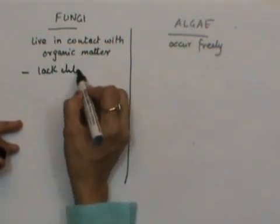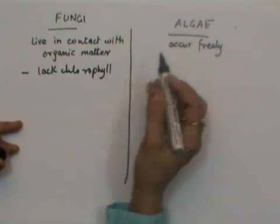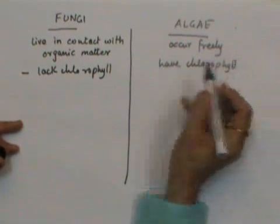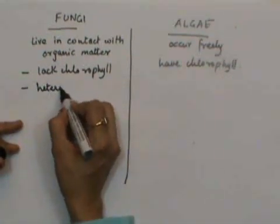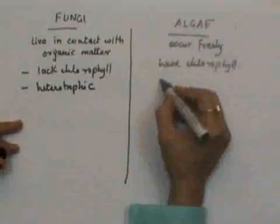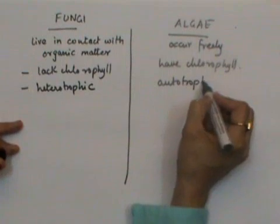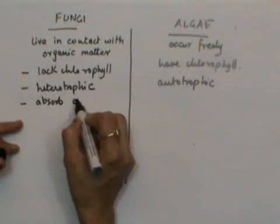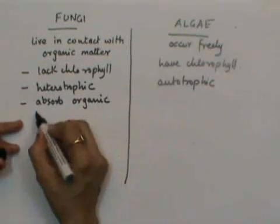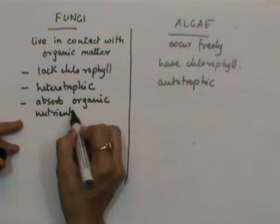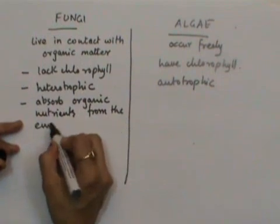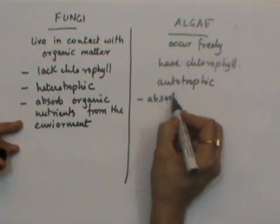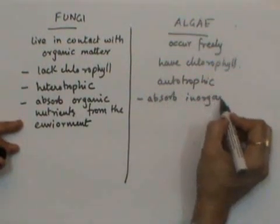Fungi lack chlorophyll, while algae have chlorophyll. Fungi are heterotrophic — they absorb organic nutrients from the environment. Algae are autotrophic — they absorb inorganic nutrients from the environment.